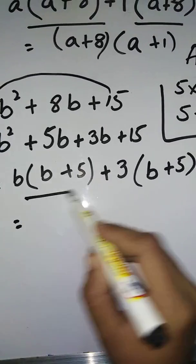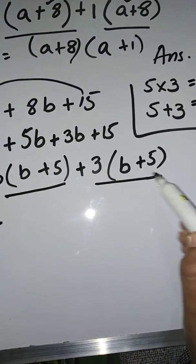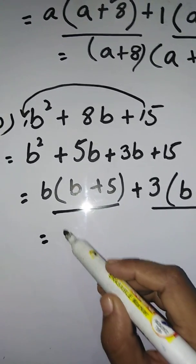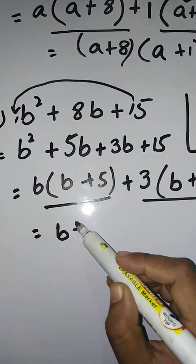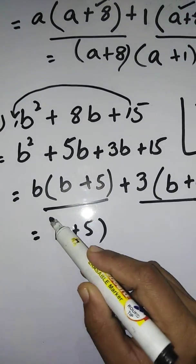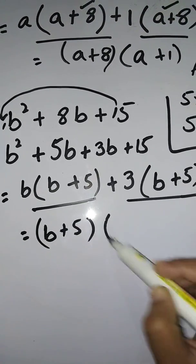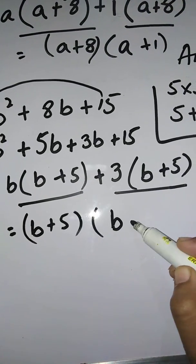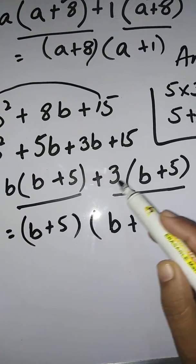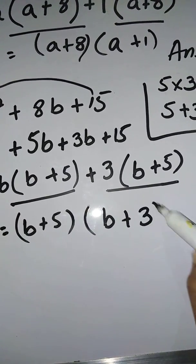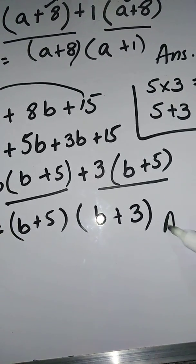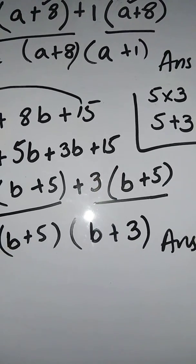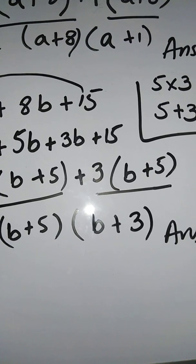Take (b + 5) as common. What is left in the first group is b, and in the second group is 3. So the final answer is (b + 5)(b + 3).